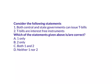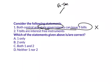Before starting today's session, first we'll see answers for the questions from our Wednesday's video. First question: consider the following statements — 'Both central and state governments can issue Treasury bills.' This statement is incorrect because state governments cannot issue Treasury bills. There are two types of government securities: short-term (Treasury bills) and long-term (bonds or dated securities).